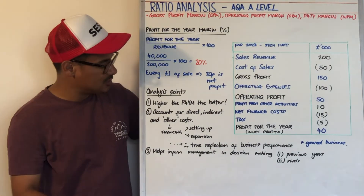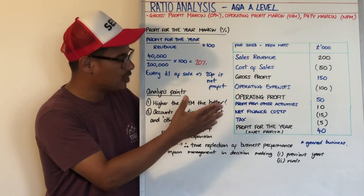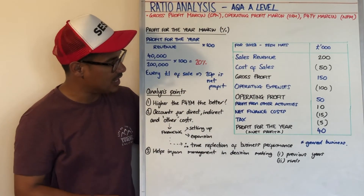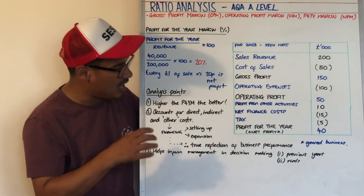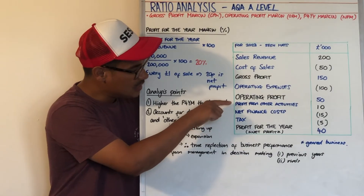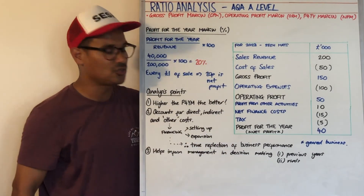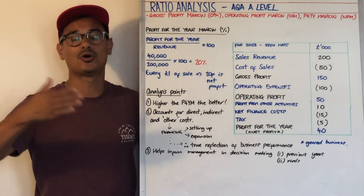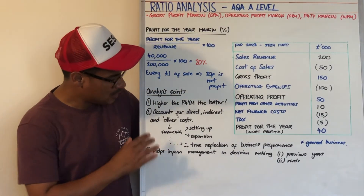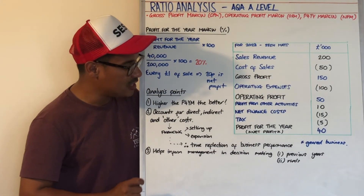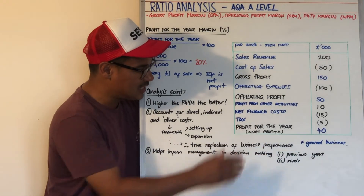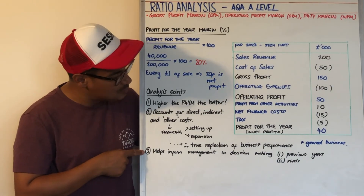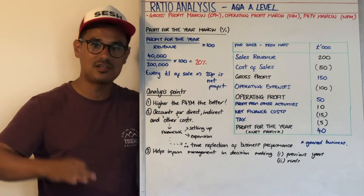Analysis points for profit for the year margin: higher is better. It accounts for direct costs (cost of sales), indirect costs (operating expenses), and other items. Particularly important is net finance costs, which is directly related to how geared the business is — a business may need to take on debt to set up or expand. So it is a true reflection of overall business performance, especially for highly geared businesses with large net finance costs. It helps inform management decision making when comparing to previous years and rivals.